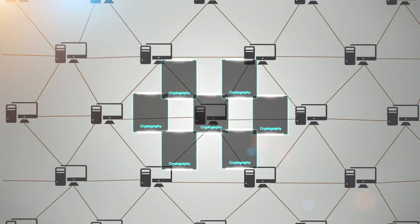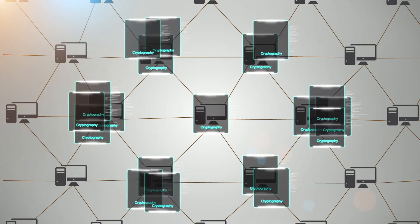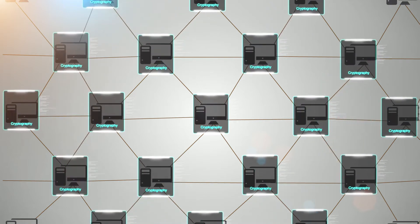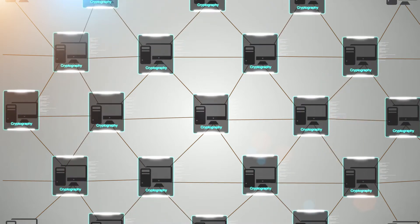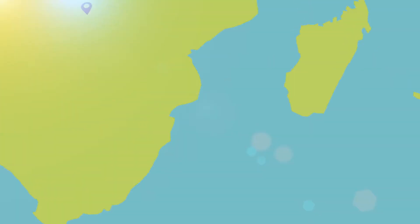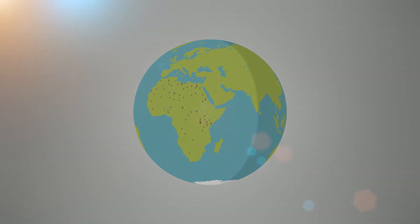The joined blocks are then posted to several independent computers within the network where storage of information occurs. The independent computers operate on a consensus model, ensuring all the participants of the network have the same information at any given time. To get a better understanding of this concept, let's look at how land ownership was managed in Kenya.